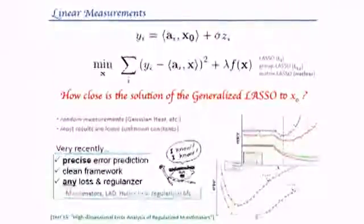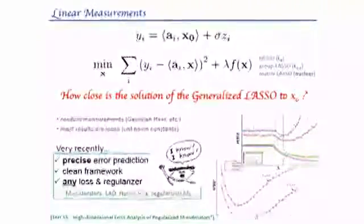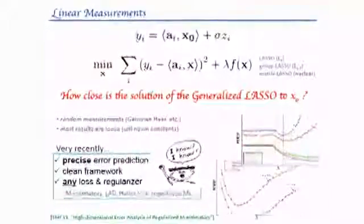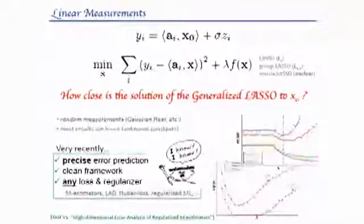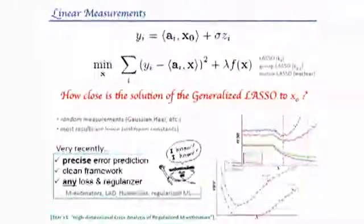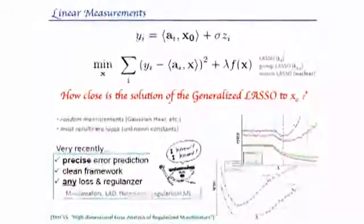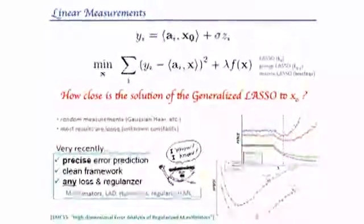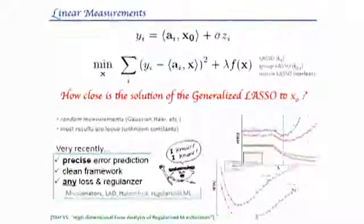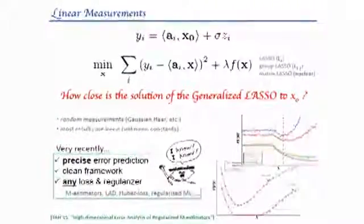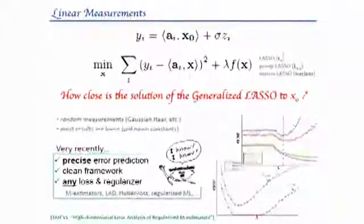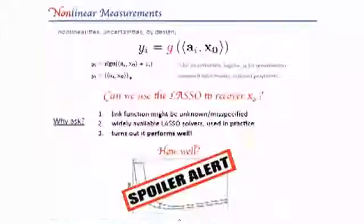In order to make this more concrete, think of the linear noisy measurement model, y equals ax plus z, we want to recover x. So all this nice theory that we know from classical statistics about least squares, m-estimators, and so on, is simply not applicable in the high dimensional setting. And so it has only been very recently that under appropriate randomness assumptions on the measurement matrix, we are able to give precise error guarantees on regularized m-estimators.